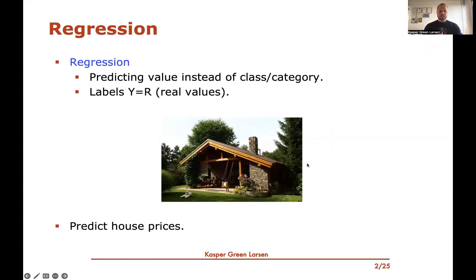To motivate the problem, we'll revisit the example we've been using in several previous videos where we want to predict the price of a house. We're really dealing with a regression problem where we're predicting a value instead of a fixed class or category, such as the price of a house. So the labels we're trying to predict are real numbers, or maybe positive real numbers or integers.